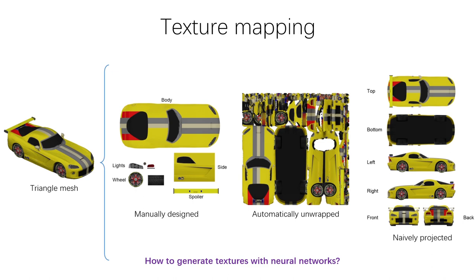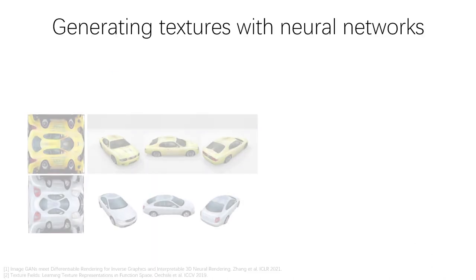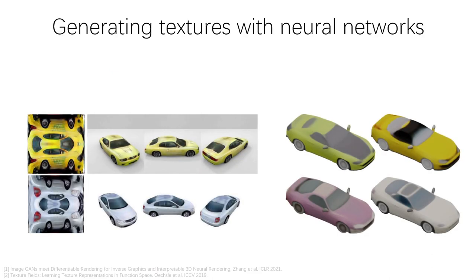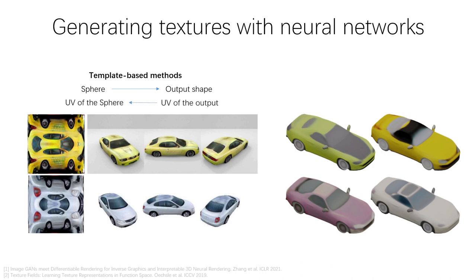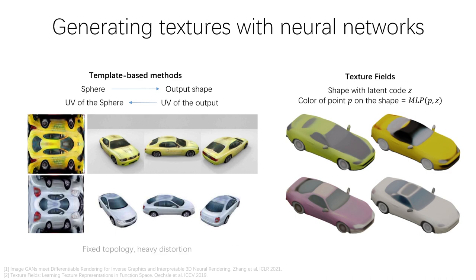So how do we generate textures with neural networks? There are two major approaches. In template-based methods, the output shape is deformed from a template mesh, usually a sphere. Therefore, the UV mapping of the output shape can directly use the UV mapping of the sphere. In texture fields, the color is represented by a continuous volumetric texture field, parameterized by an MLP. However, template-based methods have a fixed output topology and the surface could be heavily distorted. Texture fields tend to produce over-smoothed textures.